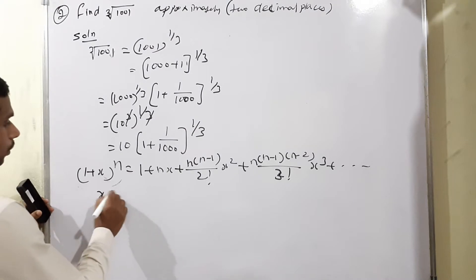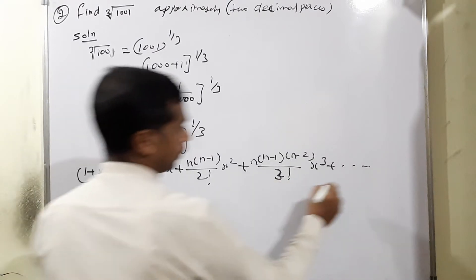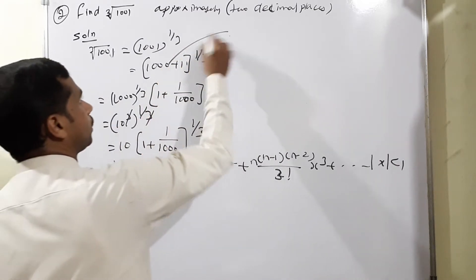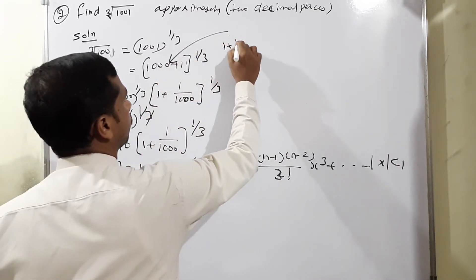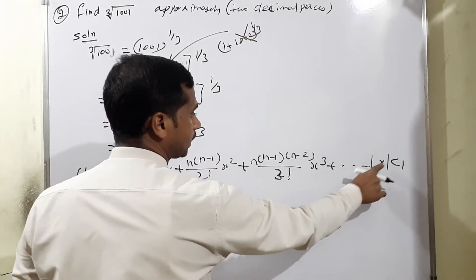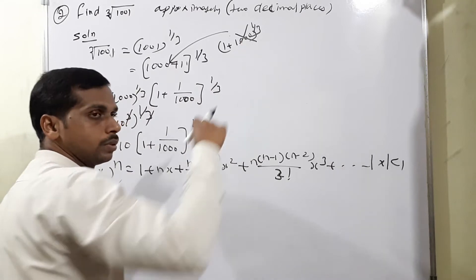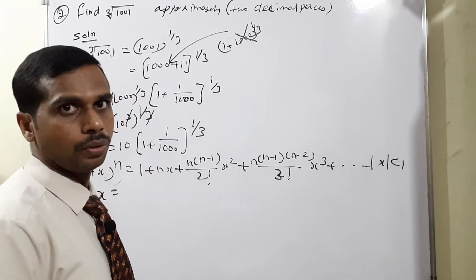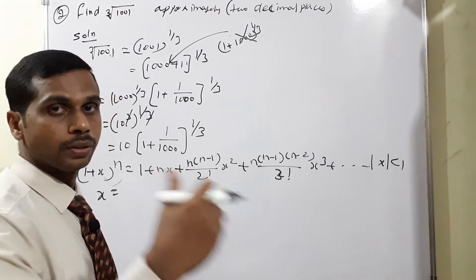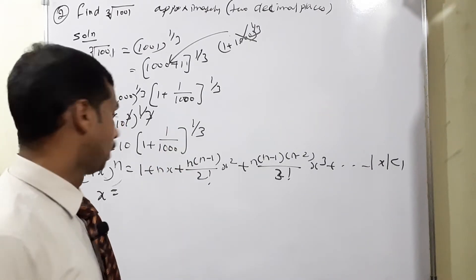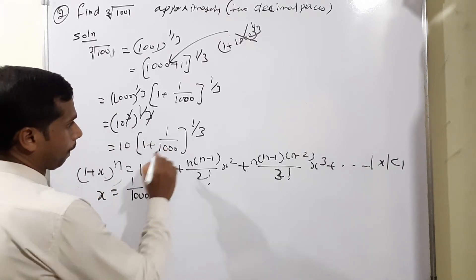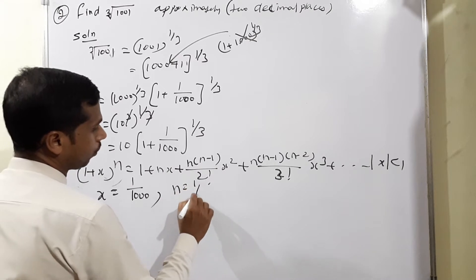The condition requires |x| < 1. We cannot directly take x = 1000 since |1000| is not less than 1. That's why we use x = 1/1000, which gives 0.00something, which is acceptable. So x = 1/1000 and n = 1/3.